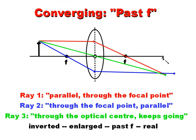The result: we get a real image where the lines meet, where they converge on the other side of the lens. This image is inverted — upside down — and enlarged, because it's a little bigger than the object. It's past F, meaning to the right of F, and it's real. It's real because it didn't need to be made out of virtual rays — we'll look at virtual rays in a moment, and then the distinction will make more sense.